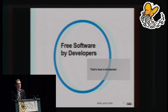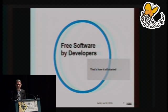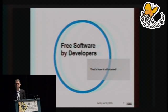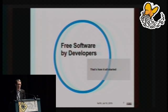Let's look at the first layer, the first stage. This is something I call free software by developers. It all started almost more than 30 years ago, when Richard Stallman sent that mail saying, 'I'm going to write a new operating system called GNU, not Unix.' You know that — and the rest is history.